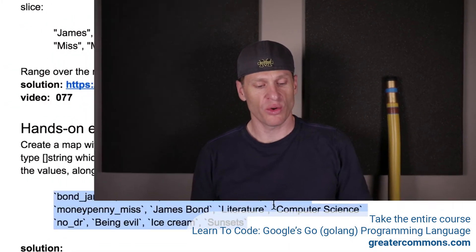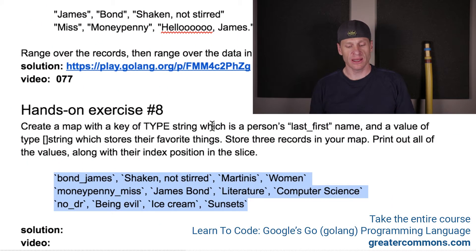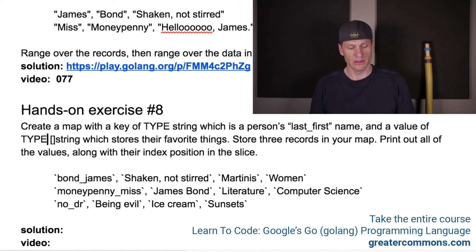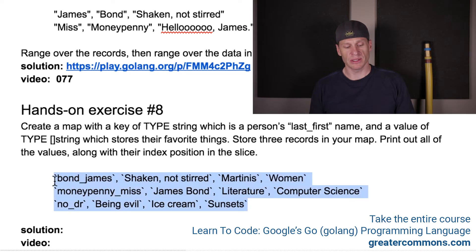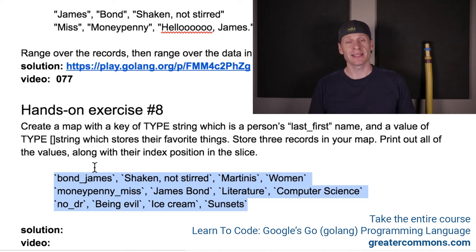For this hands-on exercise, I want you to create a map with a key of type string, which is a person's last_first name, and a value of type slice of string, which stores their favorite things. Store three records in your map — I have a possible data set right here which I'm going to copy for you. Print out all the values along with their index position in the slice.